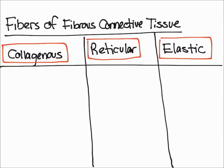In this video, I'm going to talk about the three types of fibers that make up fibrous connective tissue. As you can see, I've listed all three of them: collagenous fibers, reticular fibers, and elastic fibers. So first, let's talk about collagenous fibers.